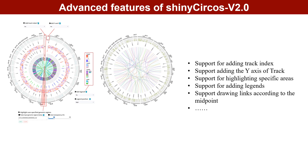In ShinyCircos v2.0, users can now add text labels to indicate the index of all tracks. Specific genomic regions can be highlighted. A y-axis has been added for supported tracks to indicate max and min values of the input data. Users can also add a color legend and use the midpoint of the link to draw links, etc.